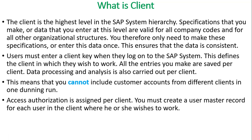This also means you cannot include customer accounts from different clients in one dunning run - dunning is a concept under accounts receivable which will be covered later. Additionally, access authorization is assigned per client. If your organization has multiple clients, access is given based on the client. The organization decides who gets authorization to log in and work in that client.